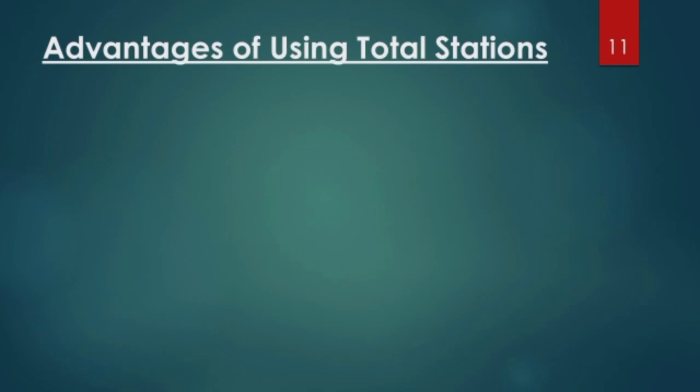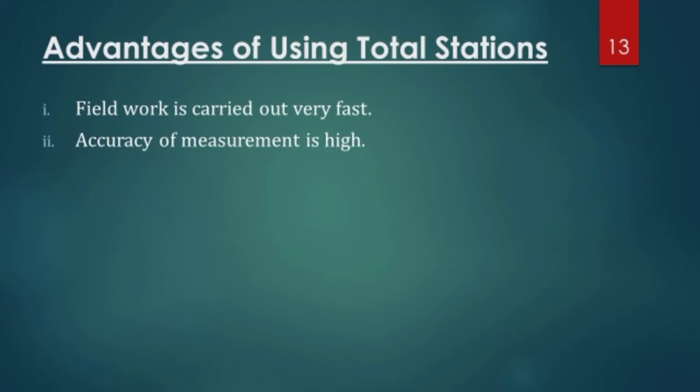Advantages of using total station, why do we use total station instead of dumpy level, theodolite, normal theodolite or any other optical or electronic instrument for that matter. First one is field work is carried out very fast. Compared to any electronic and optical surveying instruments, field work will be at its maximum speed if we are using total station. At a pressing of a single button you can get area, you can get volume, you can get perimeter, distance, angle etcetera. Second one, accuracy of measurement is very high. As all the things are digitally and electronically inside the total station, you will get accuracy as maximum compared to all the optical instruments.